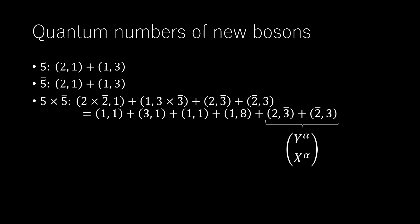Multiplying out gives (1, 1) + (3, 1) + (1, 1) + (1, 8) + (2, 3-bar) + (2-bar, 3). The singlet under both is the one in 1 + 24, and changes no quantum numbers.